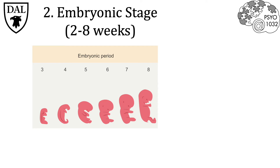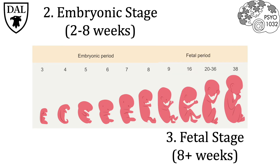The fetal stage is marked by the formation of bone cells. At this point, major organs have already formed. For example, the heartbeat can first be detected at around eight weeks. From here until birth, organs continue to grow and mature, producing rapid growth in the embryo's size.